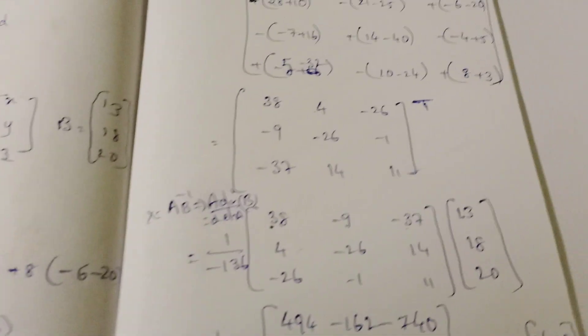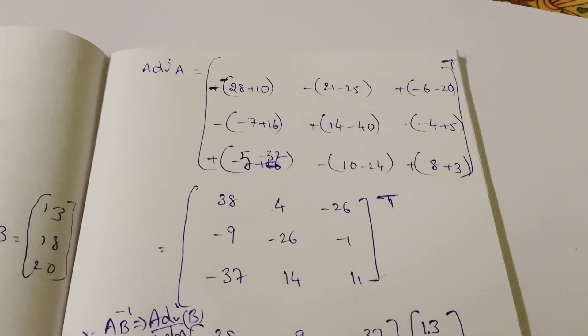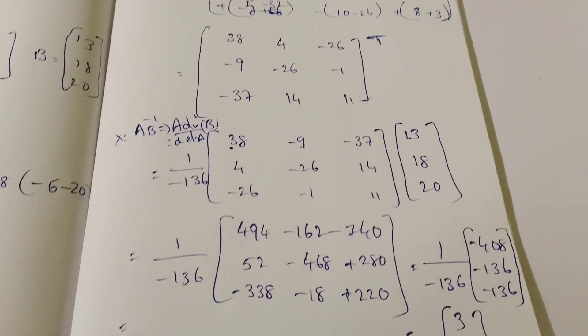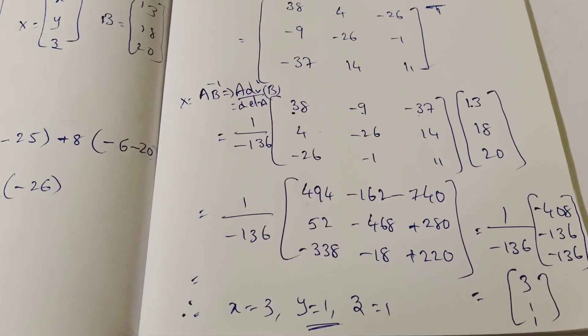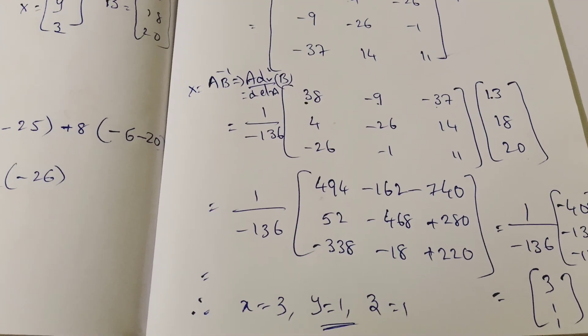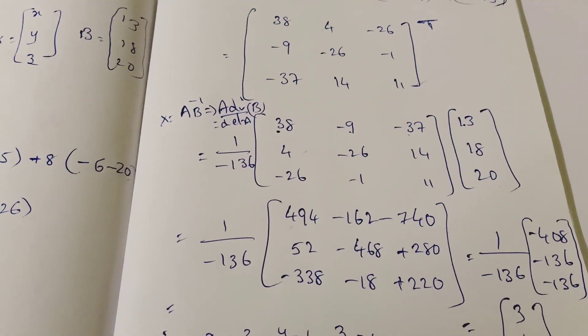This is the procedure: find determinant of A, find adjoint, then compute A inverse. Thank you, please share and like. Goodbye, all the best.